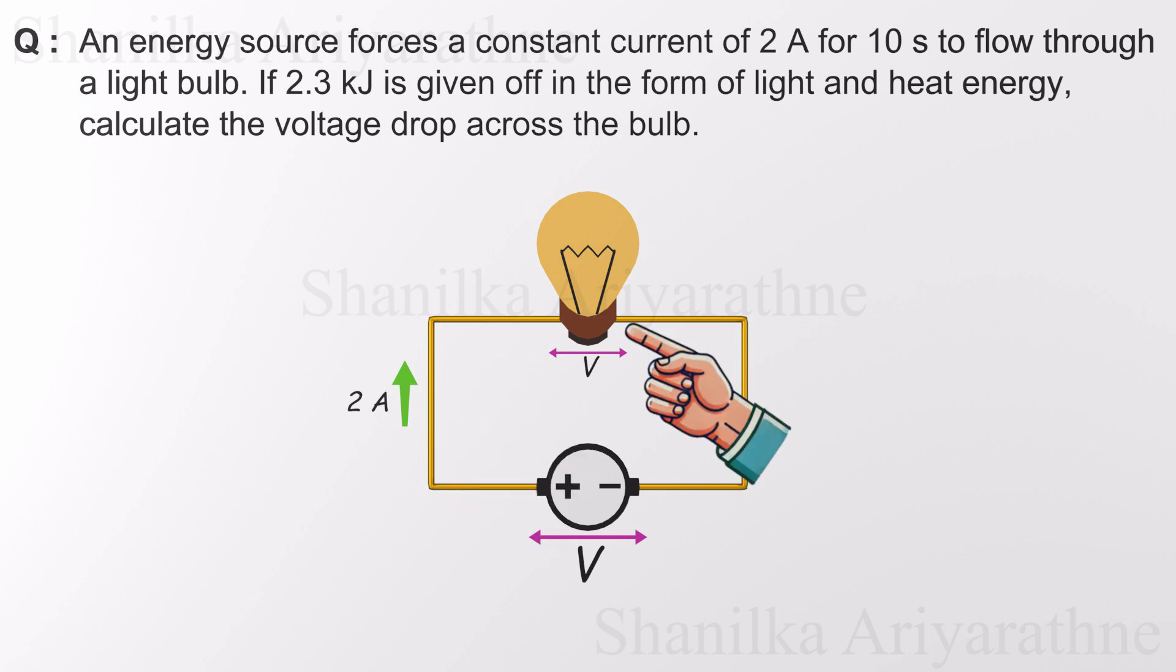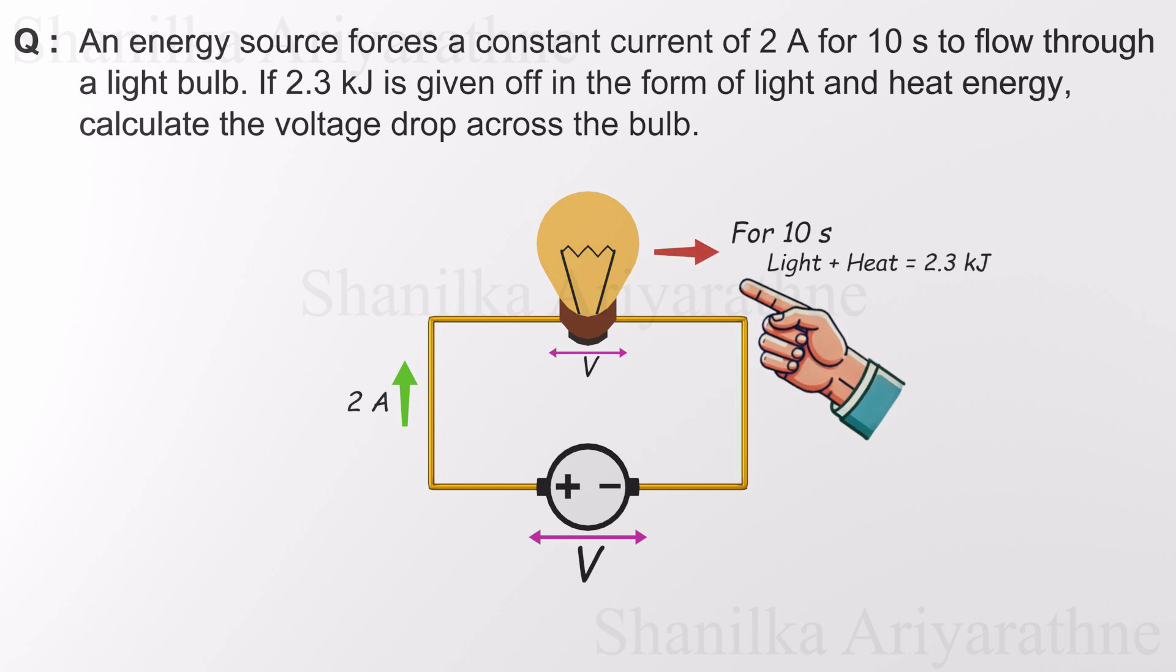Thanks to this voltage, the current flows, 2 amps worth, causing the bulb to light up and release energy. According to the problem, the bulb gives off 2.3 kilojoules of energy as light and heat over a span of 10 seconds.